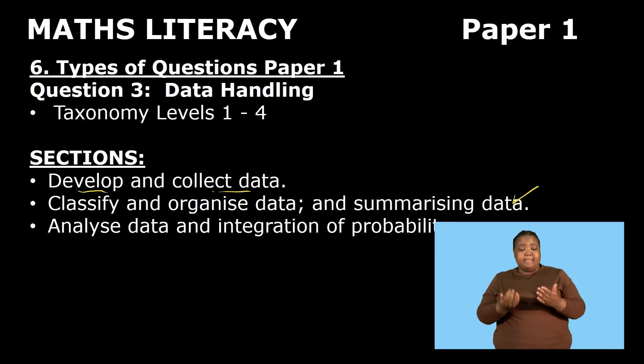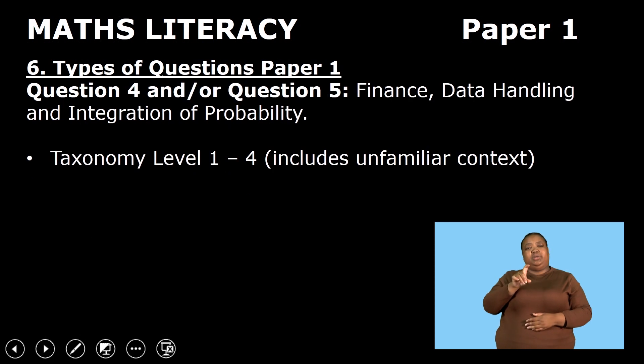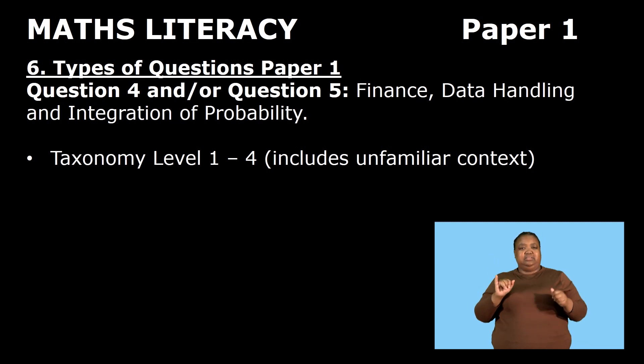whereby the integration of probability will be involved. For Question 3 and/or 5, it will be an integration of finance, data handling, and probability, and the taxonomy levels would be from level 1 to level 4 and it will